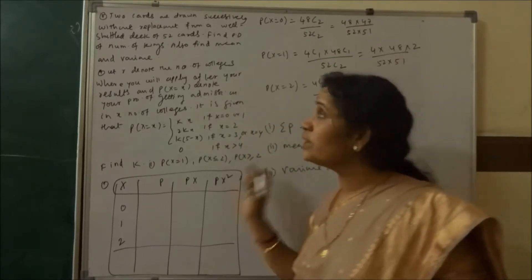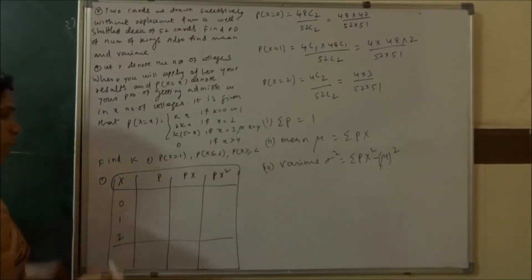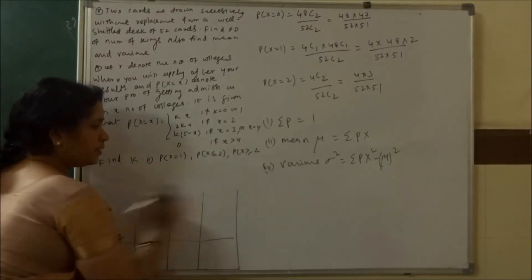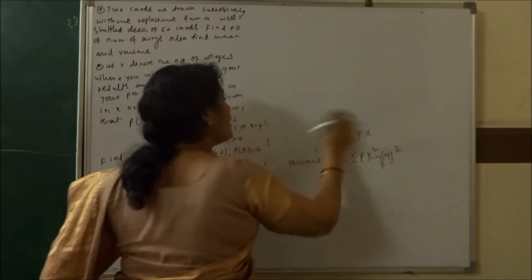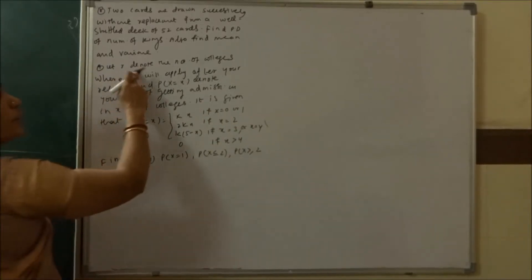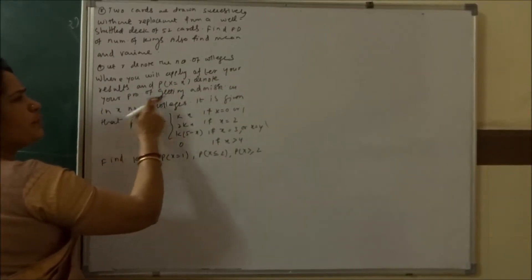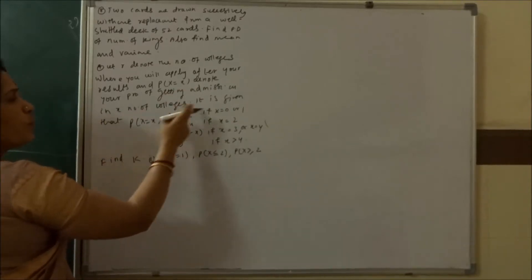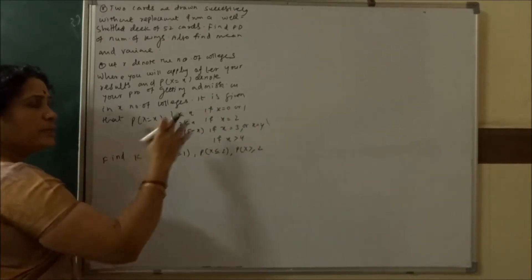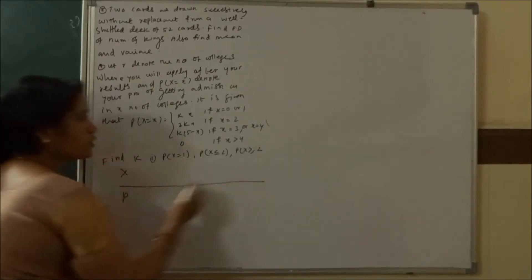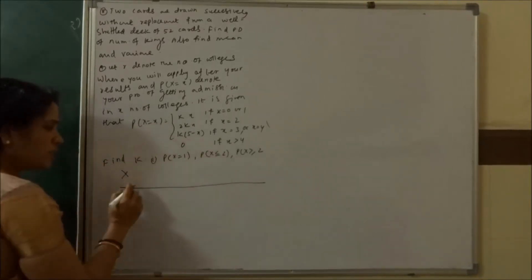This kind of without-replacement question will also be asked in exams — I have explained how to find the probability without replacement. Now let me take another important question. Let r denote the number of colleges where you will apply after your results, and p(x) denotes the probability of getting admission to x number of colleges.